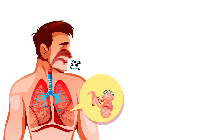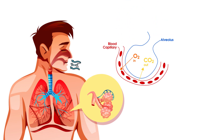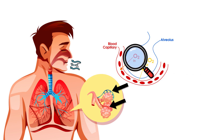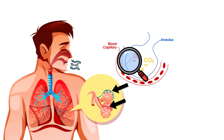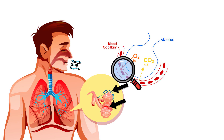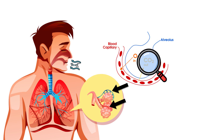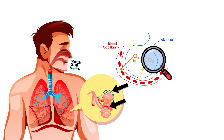The alveoli are the site of gas exchange. Their thin walls are surrounded by a dense network of capillaries. Here, oxygen from the inhaled air passes through the alveolar walls and into the blood, while carbon dioxide from the blood diffuses into the alveoli to be exhaled.